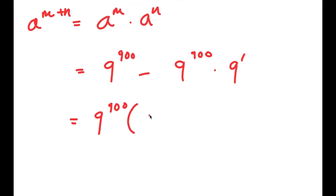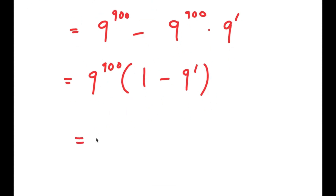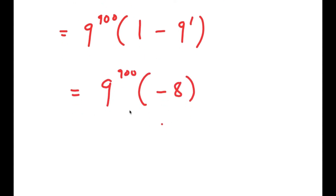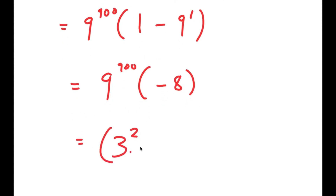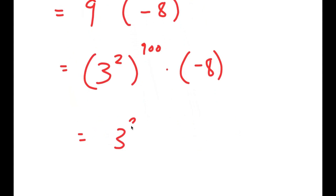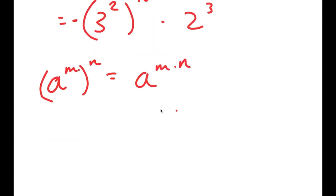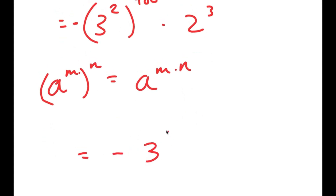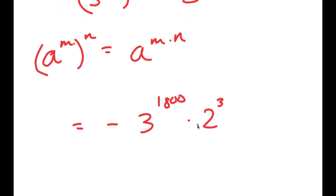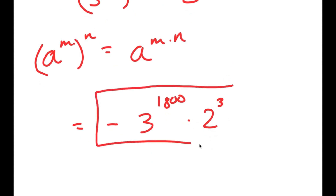Now, if I factor out 9 to the power of 900, I get 9 to the power of 900 times 1 minus 9 to the power of 1, which equals 9 to the power of 900 times negative 8. This turns into 3 squared to the power of 900 times negative 8, and negative 8 can be rewritten as negative 2 to the power of 3. Using the property that a to the power of m to the power of n equals a to the power of m times n, this becomes negative 3 to the power of 1800 times 2 to the power of 3. This is the most I can simplify, so this is my answer.